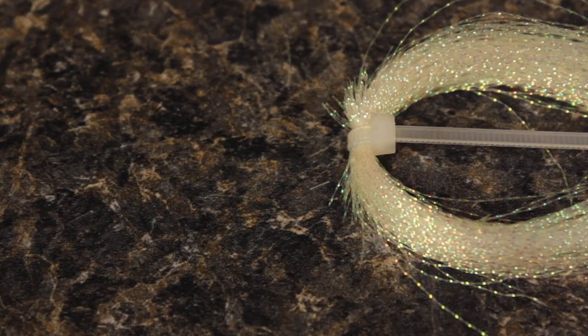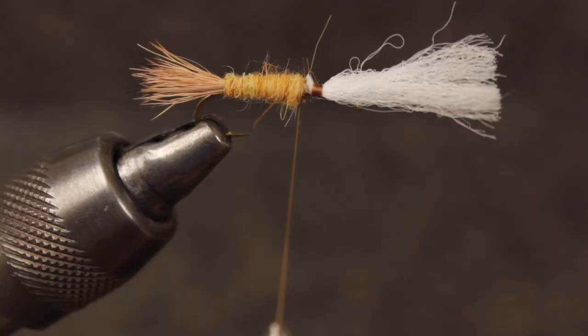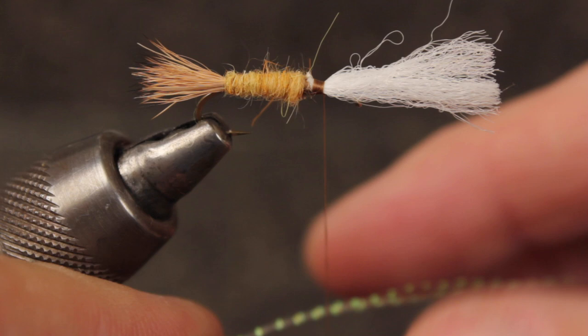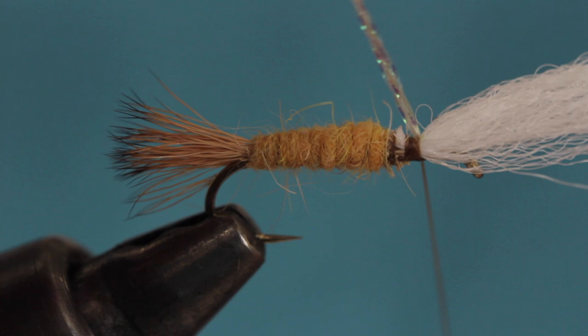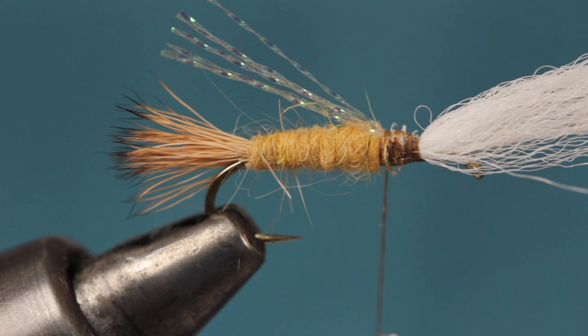Snip three or four strands of pearl crystal flash free from the hank. Position your tying thread right at the base of the parachute post and then fold an inch or so of the crystal flash around your thread and bring the fold first up and then down on top of the hook shank. This will double the number of strands of crystal flash. Take wraps rearward to combine the strands into a single underwing. You can then snip the flash off just shy of the tip of the tail.